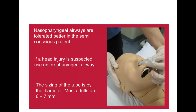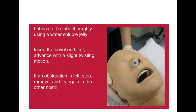Insert the bevel end first, vertically along the floor of the nose, with a slight twisting action. If any obstruction is met, remove the tube and try the left nostril. Once the airway is in place, use a look, listen and feel technique to check the patency of the airway and adequacy of ventilation. A jaw thrust or chin lift may be required to maintain airway patency.